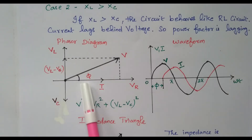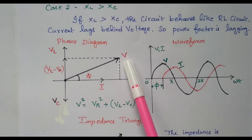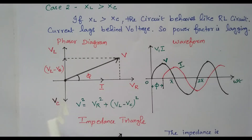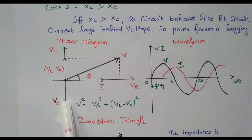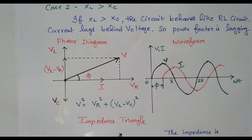Because voltage is leading, we are getting the phase angle in a positive value. V is the vector sum: square root of Vr squared plus (Vl minus Vc) squared. The current is taken as reference, the voltage across the resistor is in phase with the current, the voltage across the inductor leads, the voltage across the capacitor lags. The difference between these two is Vl minus Vc, and the total is voltage V.